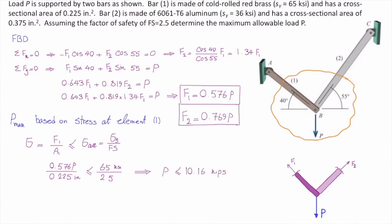So, if I solve that for P, P would be equal to 10.16. What does it mean? It means that if we want to make sure that the stress in element number 1 is not exceeding that value, the external force should be smaller than 10.16 kips. Does that make sense?